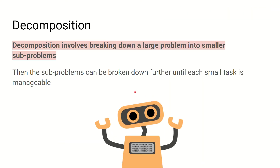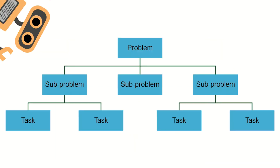The last strand of computational thinking that we're focusing on is decomposition. Decomposition involves breaking down a large problem into a smaller problem or smaller subtasks. Rather than trying to solve a problem all in one go, it makes it easier to break it down into smaller, more manageable chunks so that we can complete the task in the most efficient way possible.